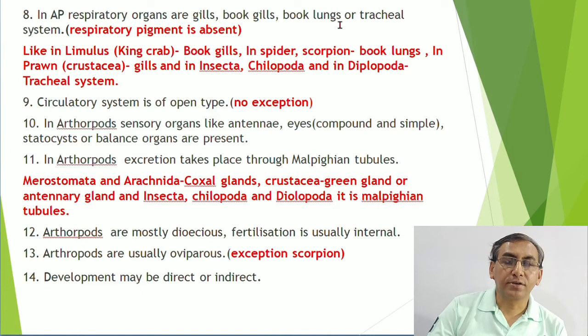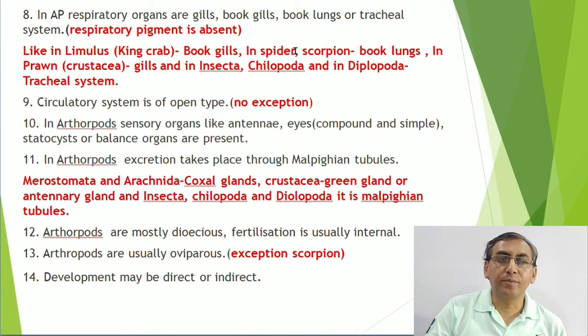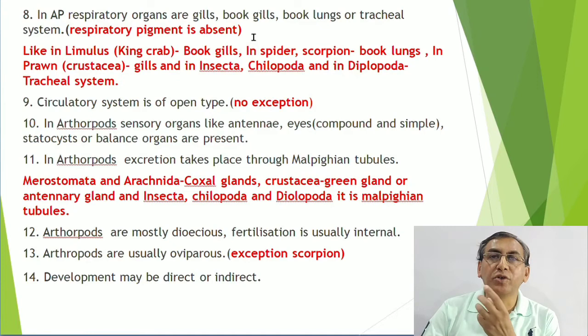Respiratory pigment is absent in arthropods. In cockroach, hemoglobin is absent because oxygen directly reaches body cells through branches of the trachea called tracheoles. Limulus (king crab) has book gills, spiders and scorpions have book lungs, prawns (Crustacea) have gills, and in Insecta, Chilopoda, and Diplopoda they have a tracheal system.